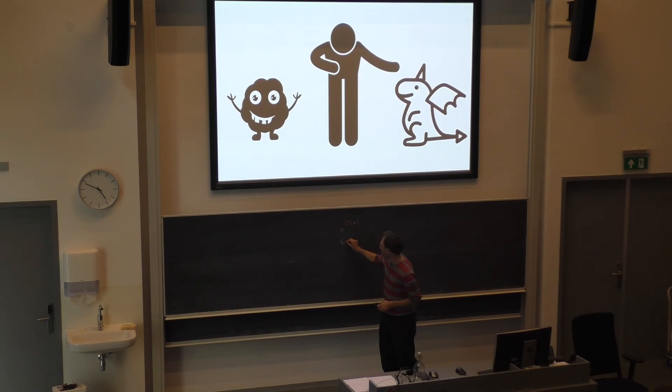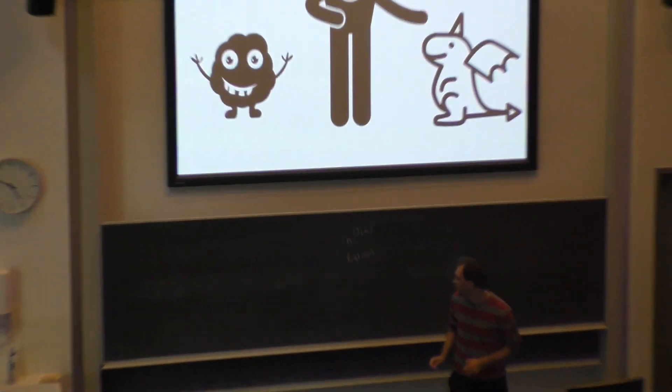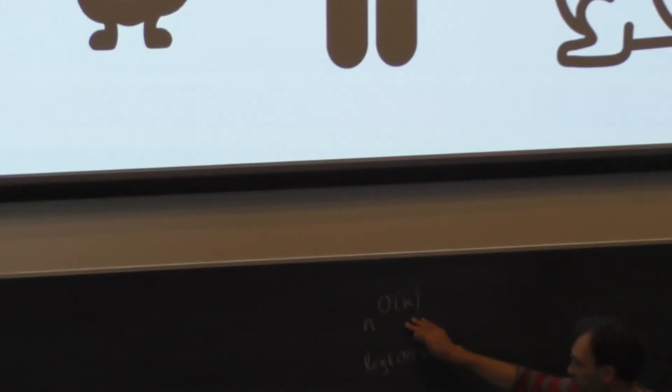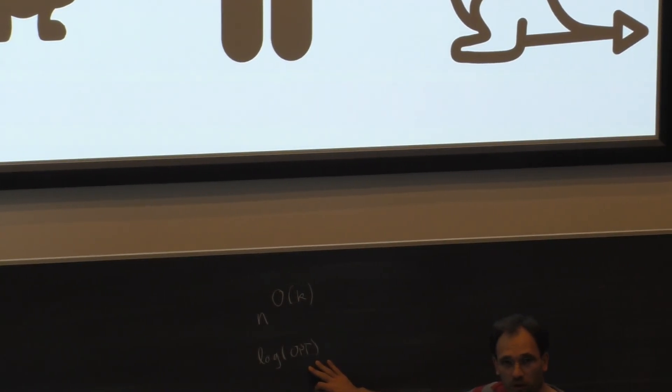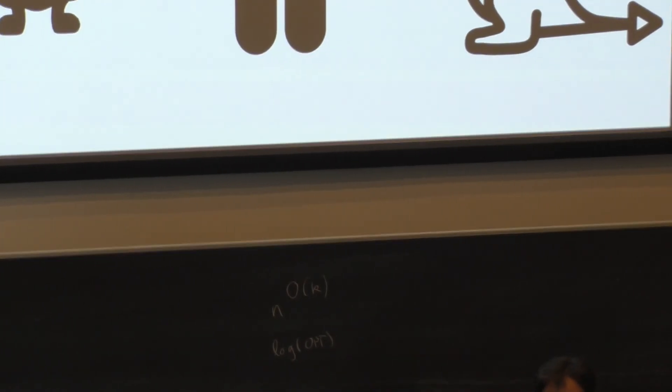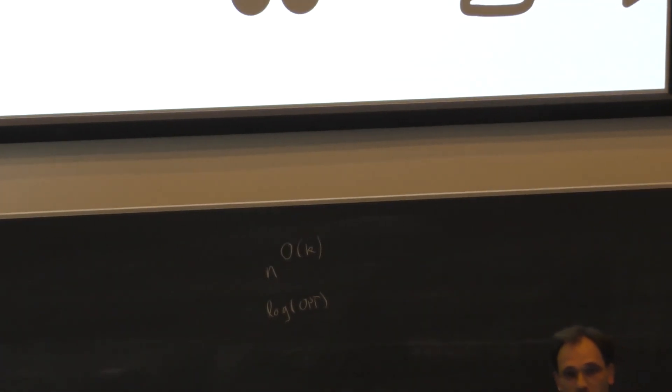And yeah, log n is the best approximation, I think log opt. So this is the best approximation factor that we have currently. We know we have corresponding lower bounds for this, but we don't know if there are better approximation algorithms. But we know that you can't find better than constant factor approximation.